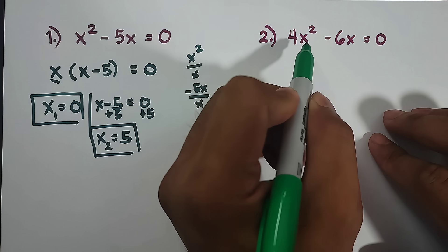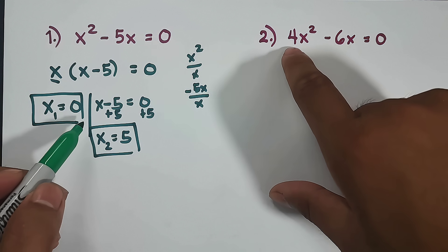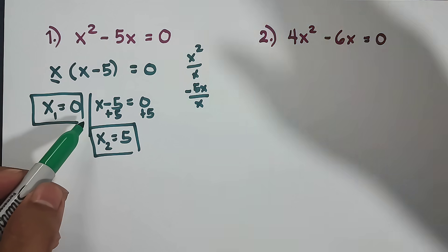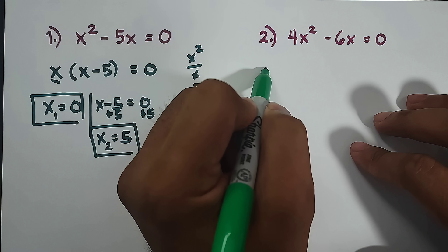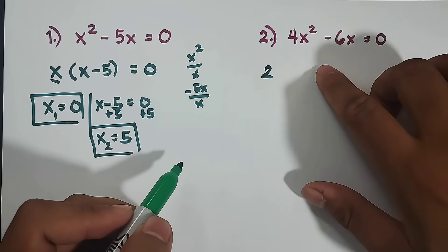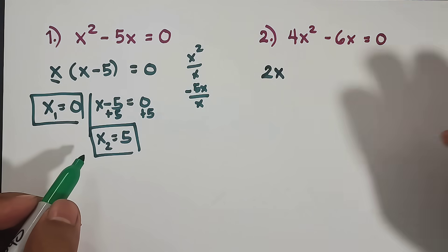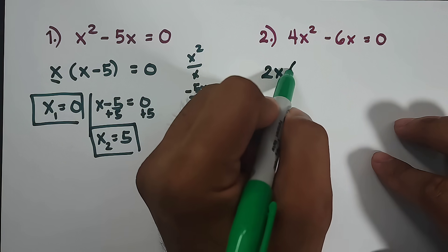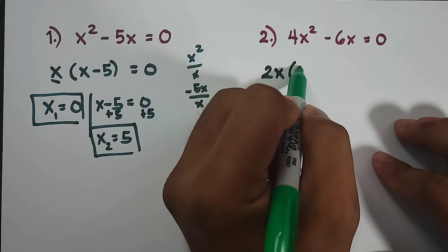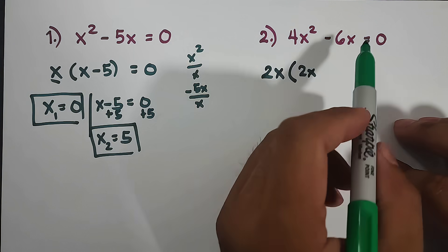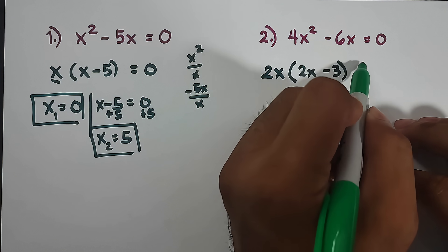Next, we have 4x squared minus 6x equals 0. From the coefficients, we have 4 and negative 6, so their common factor is 2. For the variable, we have x squared and x, so the common variable factor is x. Our greatest common factor is 2x. Dividing 4x squared by 2x gives 2x, and negative 6x divided by 2x equals negative 3. Equate by 0. You can verify by multiplying: 2x times 2x is 4x squared, and 2x times negative 3 is negative 6x.